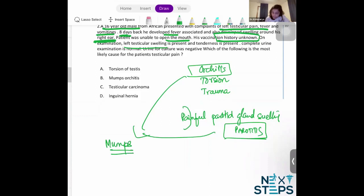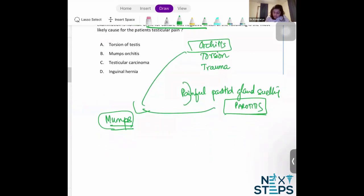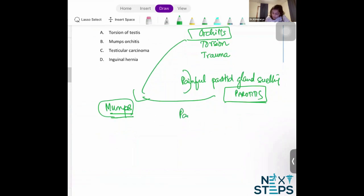It is essentially a viral infection, so it will be culture negative. It usually occurs in unvaccinated children with predominantly orchitis, parotitis, and also pancreatitis less frequently.